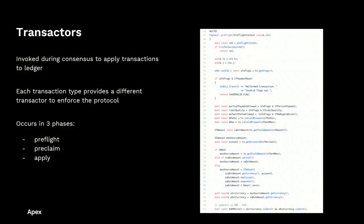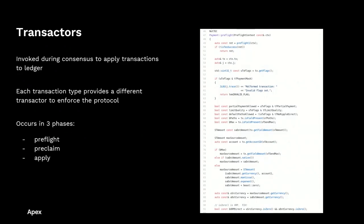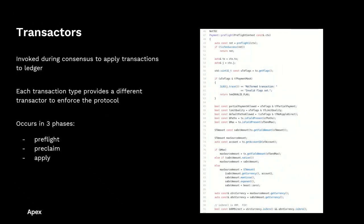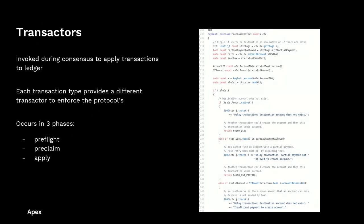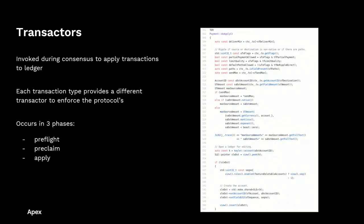Transactors are invoked during the consensus process to actually apply transactions to the ledger. Each transaction type has its own transactor. These occur in three phases: pre-flight, pre-claim, and apply. On the right we see the logic behind the pre-flight phase of the payment transactor, which is responsible for ensuring that the transaction is in compliance with basic checks of the system. If a transaction fails this phase, a fee will not be consumed and the transaction will not be relayed across the network. Pre-claim is responsible for checking the node store database, ensuring the transaction is consistent with state. If transactions fail this phase, a fee will be consumed and these transactions are propagated across the network. Finally, do-apply is where the actual meat of the transaction occurs and the transaction is applied to the blockchain.